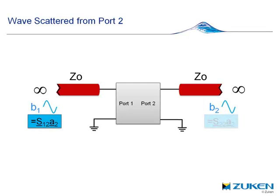So B1 is the S-parameter S12 times A2, and B2 is the S-parameter S22 times A2.